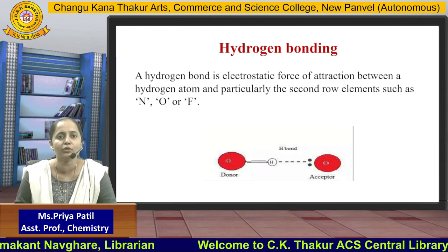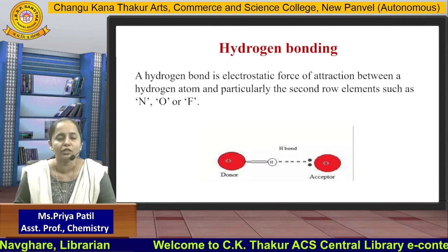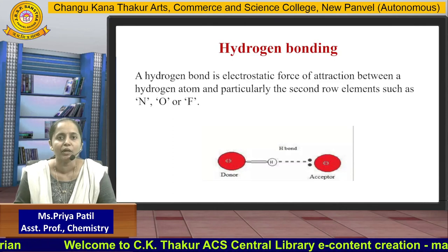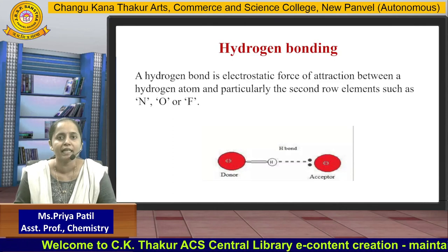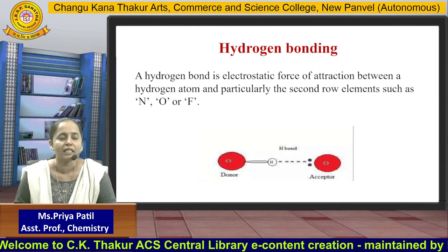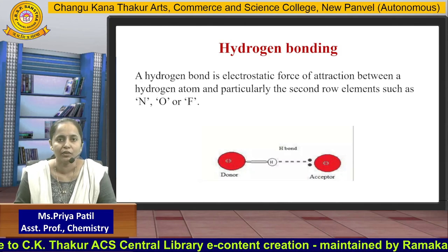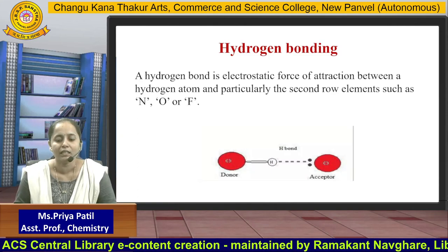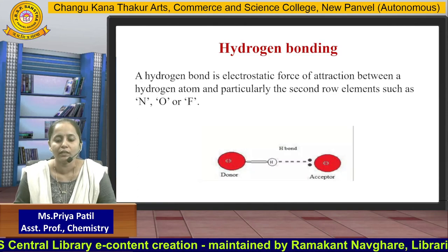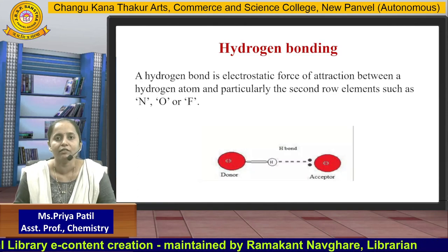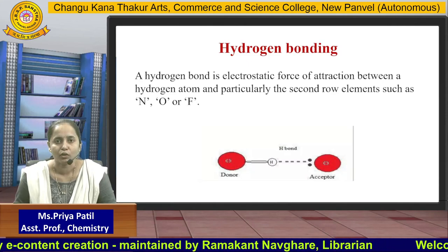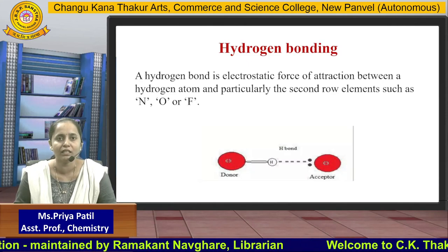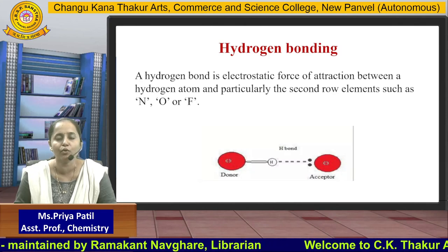The first is Hydrogen bonding, in which the hydrogen bond is an electrostatic force of attraction between a hydrogen atom and particularly the second row elements such as nitrogen, oxygen, and fluorine. In the diagram you can see the donor atom, which is hydrogen, and the acceptor atom, which has the lone pair of electrons. Both atoms can form hydrogen bonding, which is simply a force of attraction.